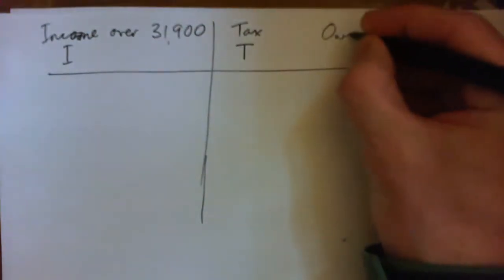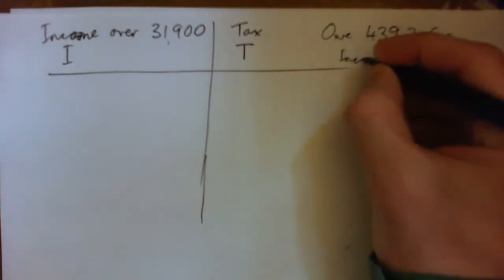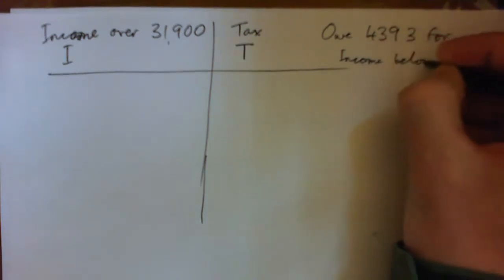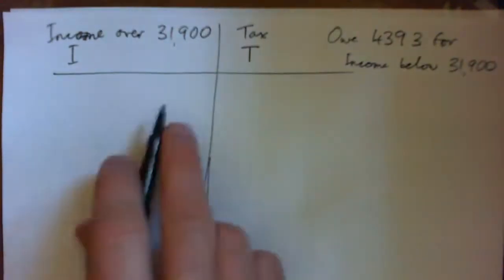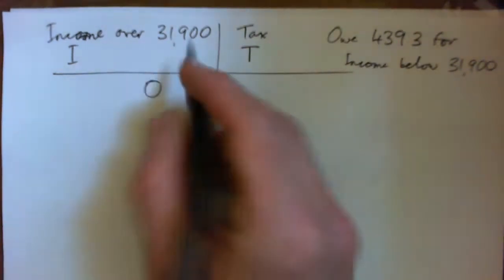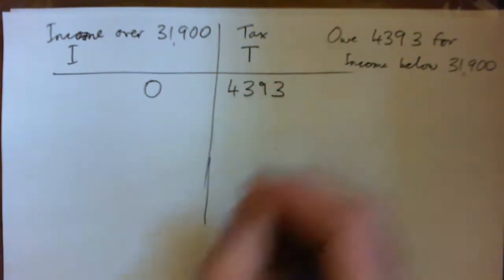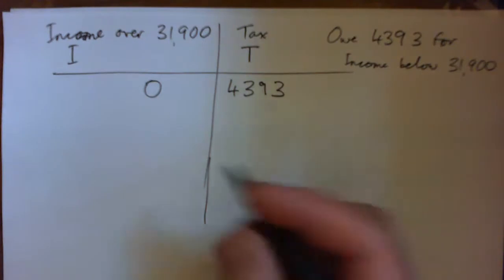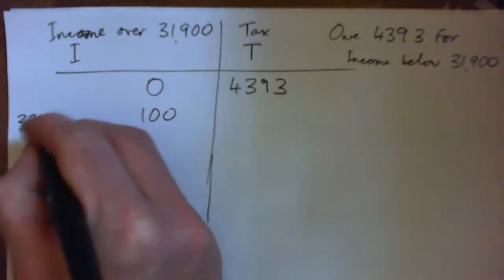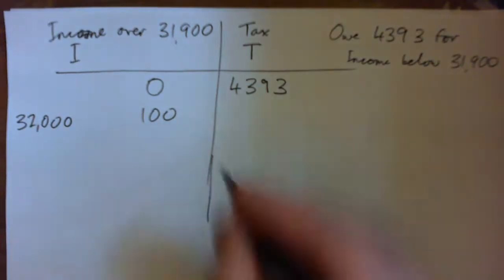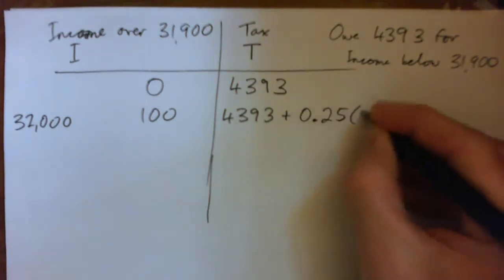That's the trick: you owe $4,393 for your income up to $31,900. So if you earn exactly that, your tax is just $4,393. If you earn, say, $100 over — taxable income of $32,000 — you'll pay $4,393 plus 25% of $100.